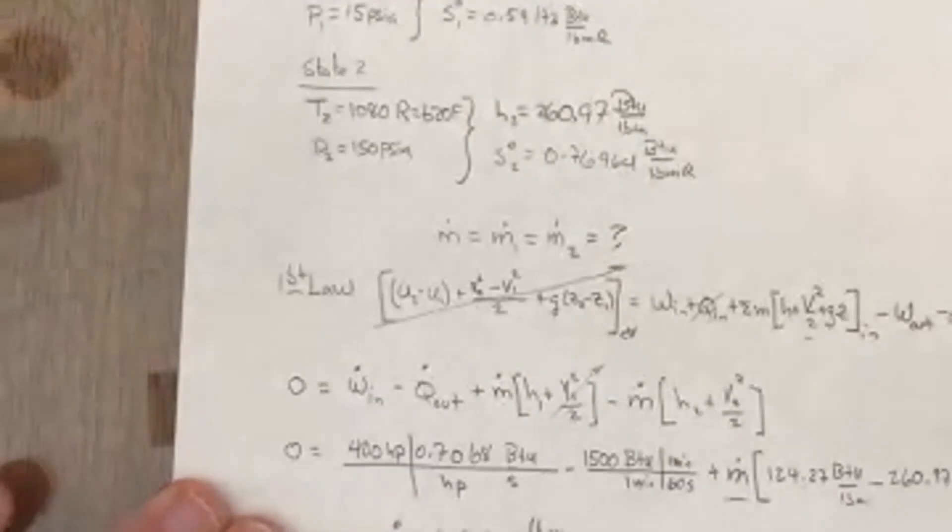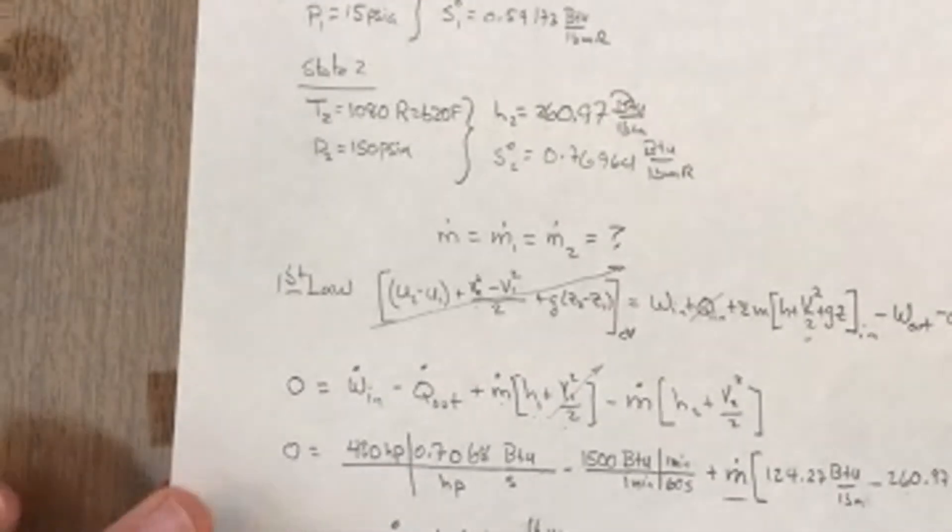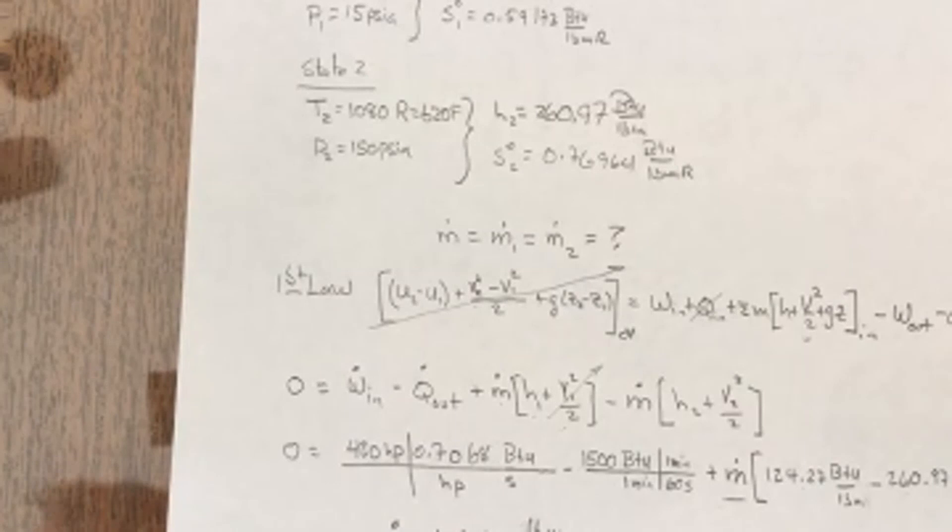Ultimately, I can solve for M dot here and get 1.852 pound mass per second.